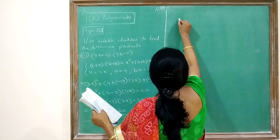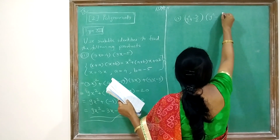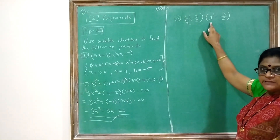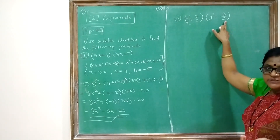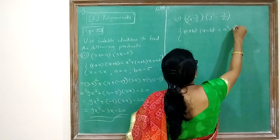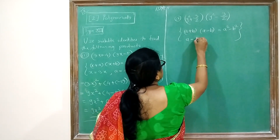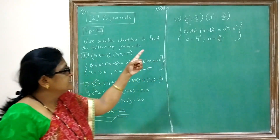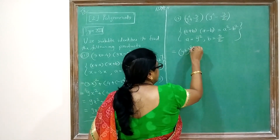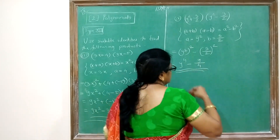The next example is (y² + 3/2)(y² − 3/2). Here the values are the same but with opposite signs, so we use the identity (a + b)(a − b) = a² − b². Here a = y² and b = 3/2. So the answer is (y²)² − (3/2)² = y⁴ − 9/4.